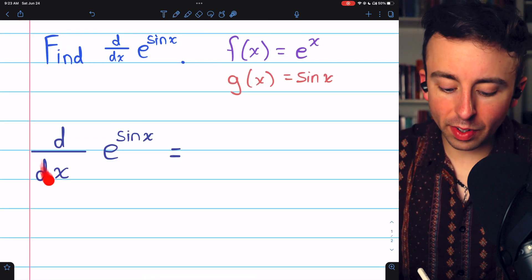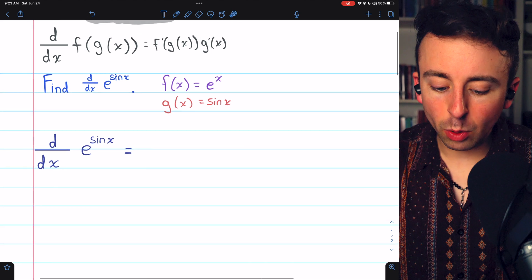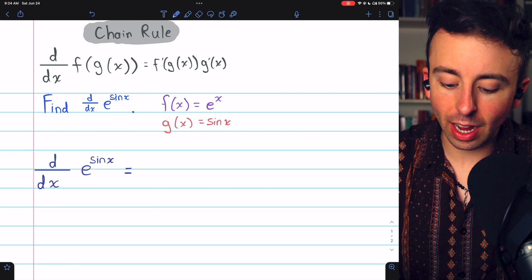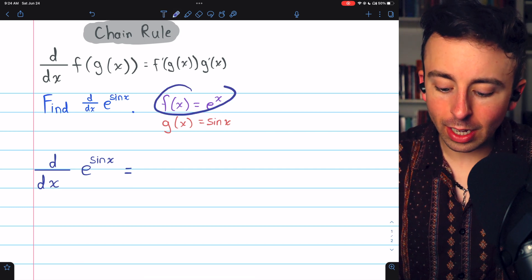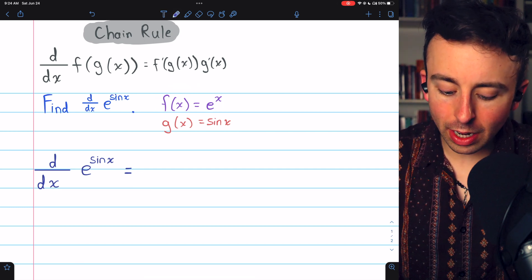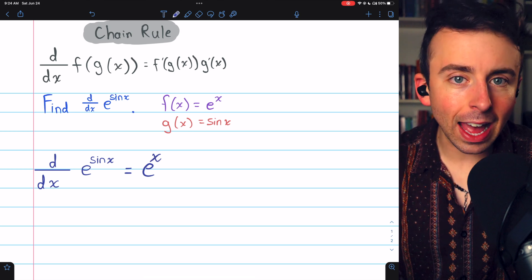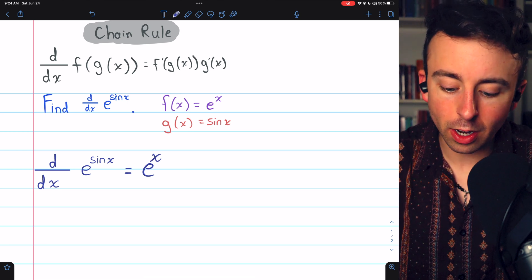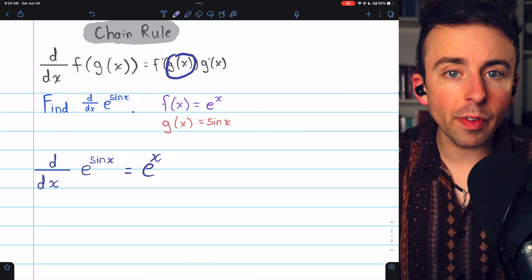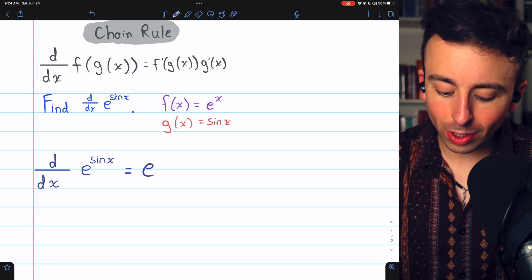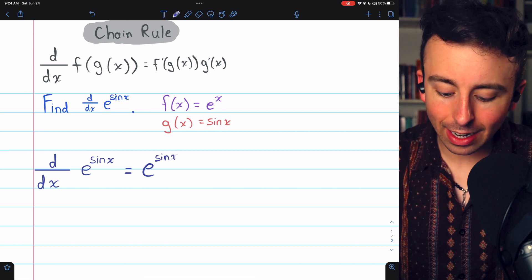So what's the derivative of e to the sine x? Well, by the chain rule, we begin with f prime, the derivative of the outside function. The outside function is e to the x, and the derivative of e to the x is just e to the x. But it's not x that should be in this function. Rather, it's g of x. We want to leave the inside function unchanged, so it's actually e to the sine x.